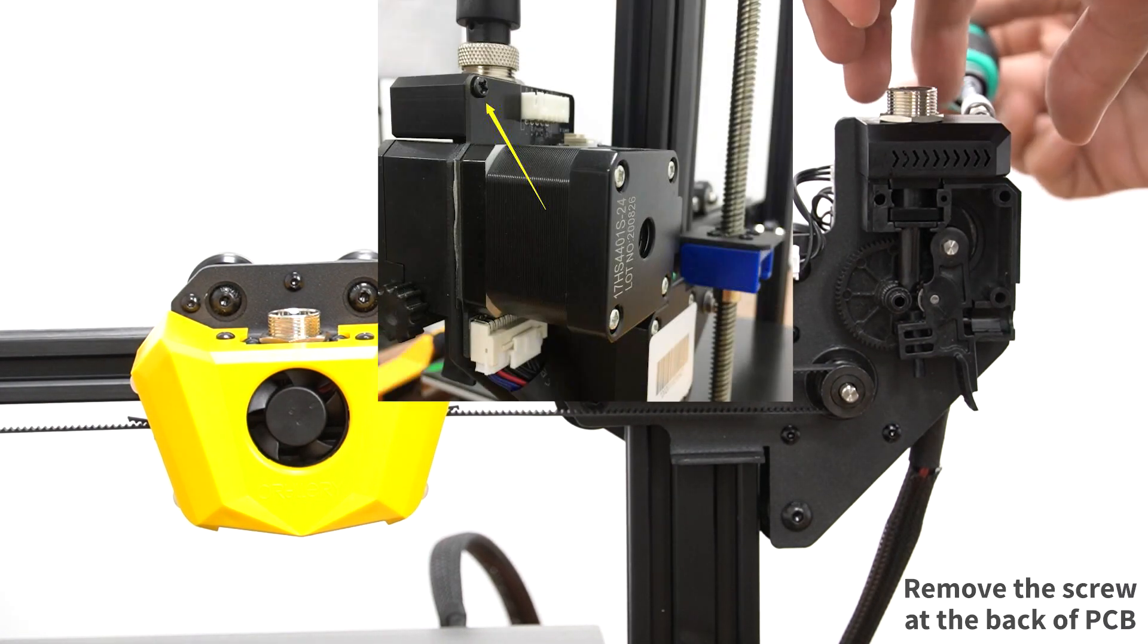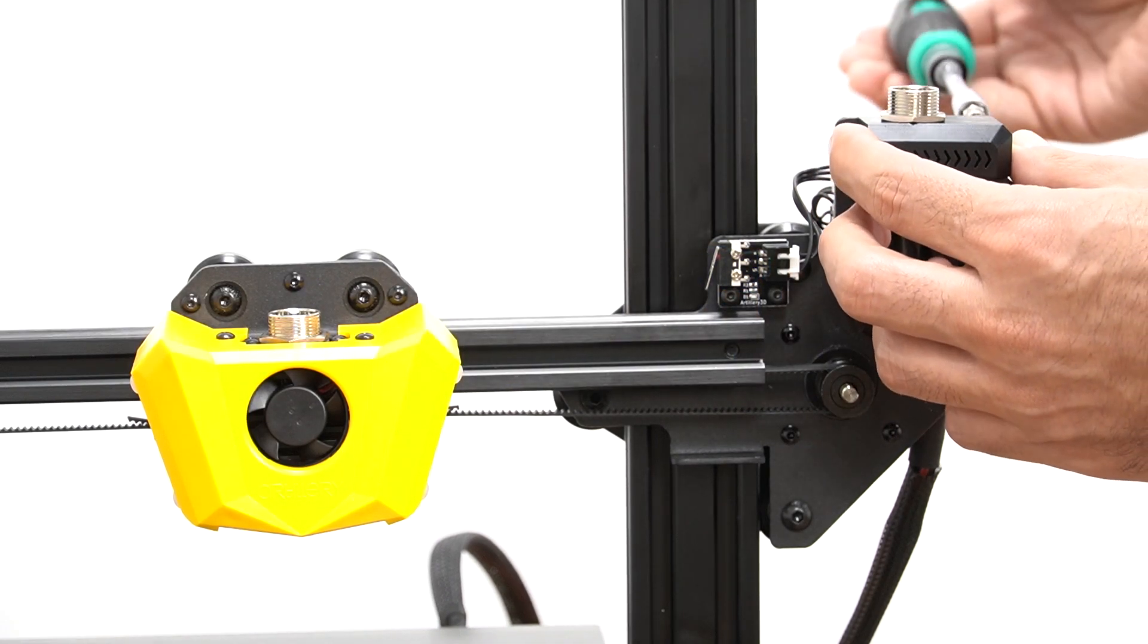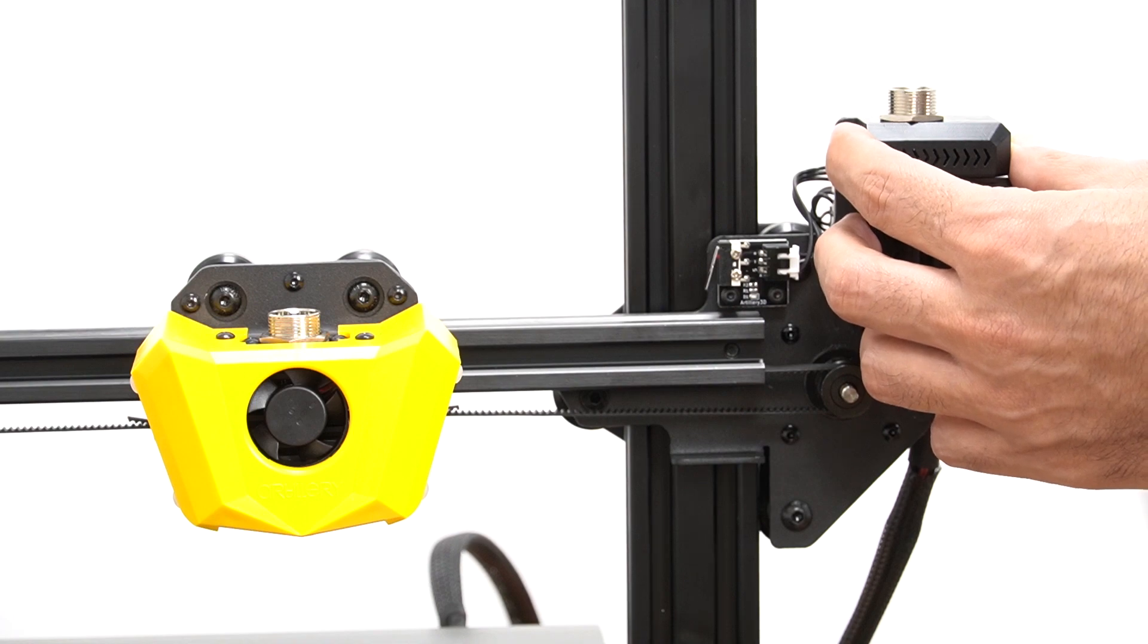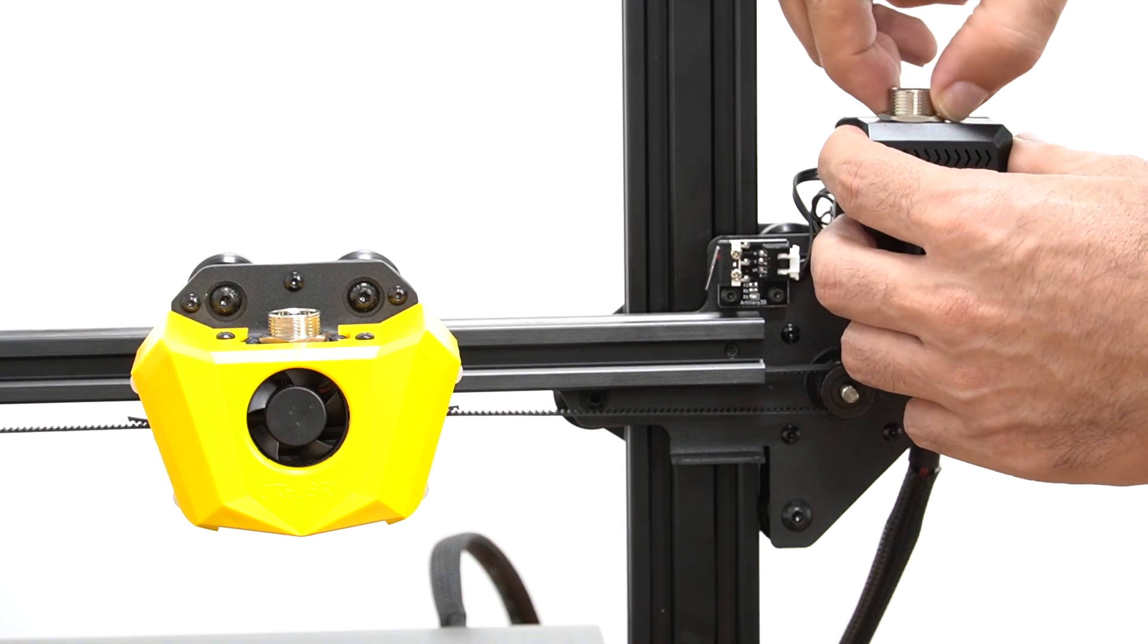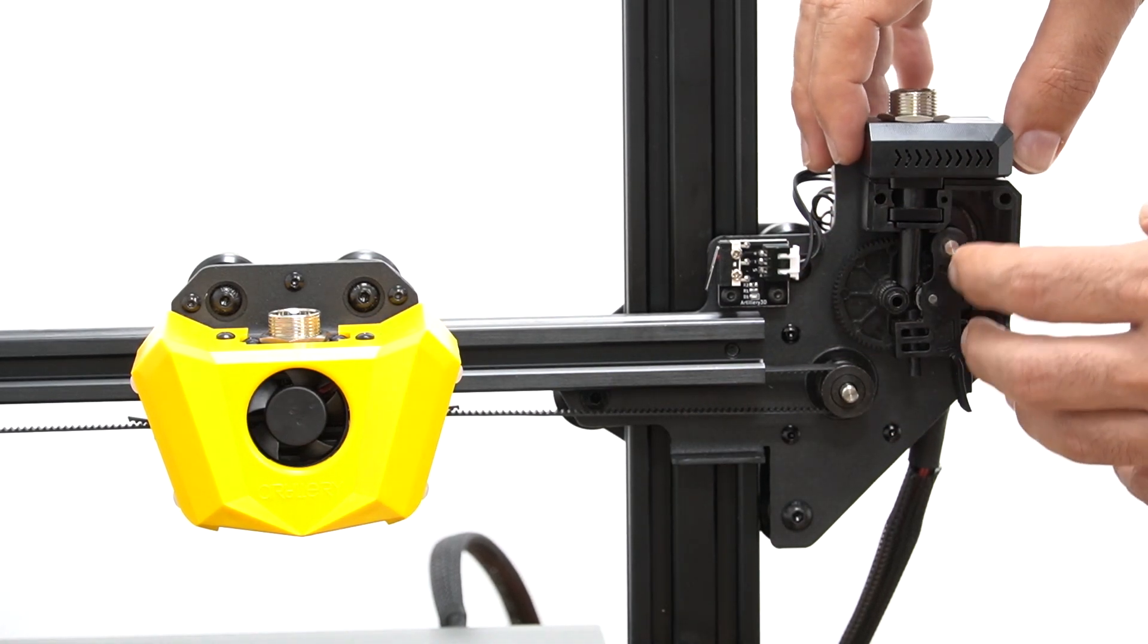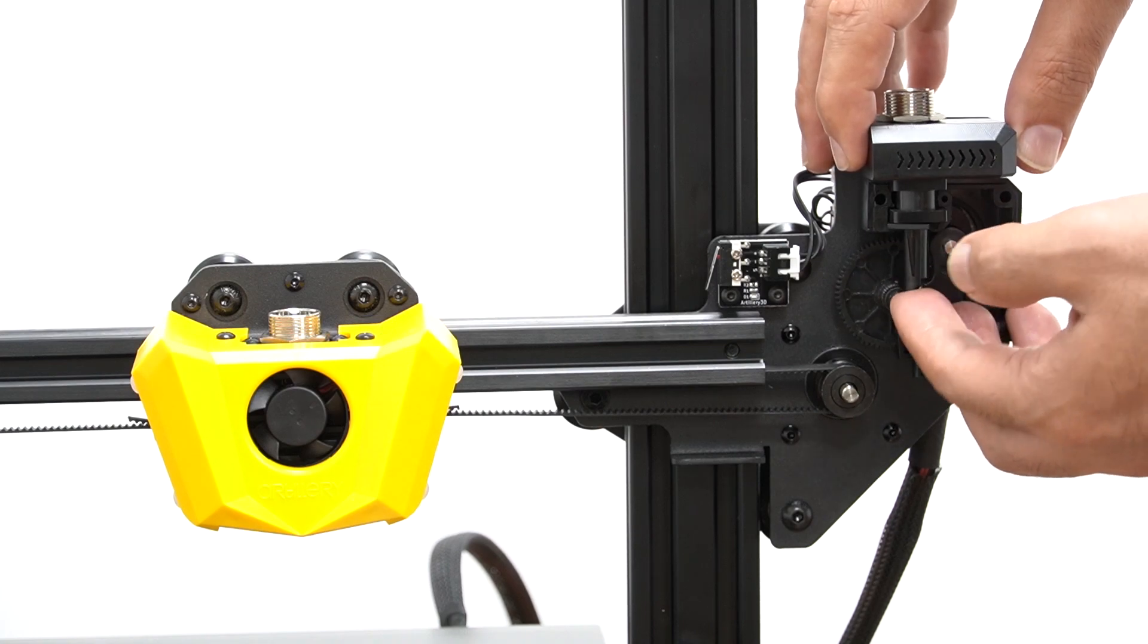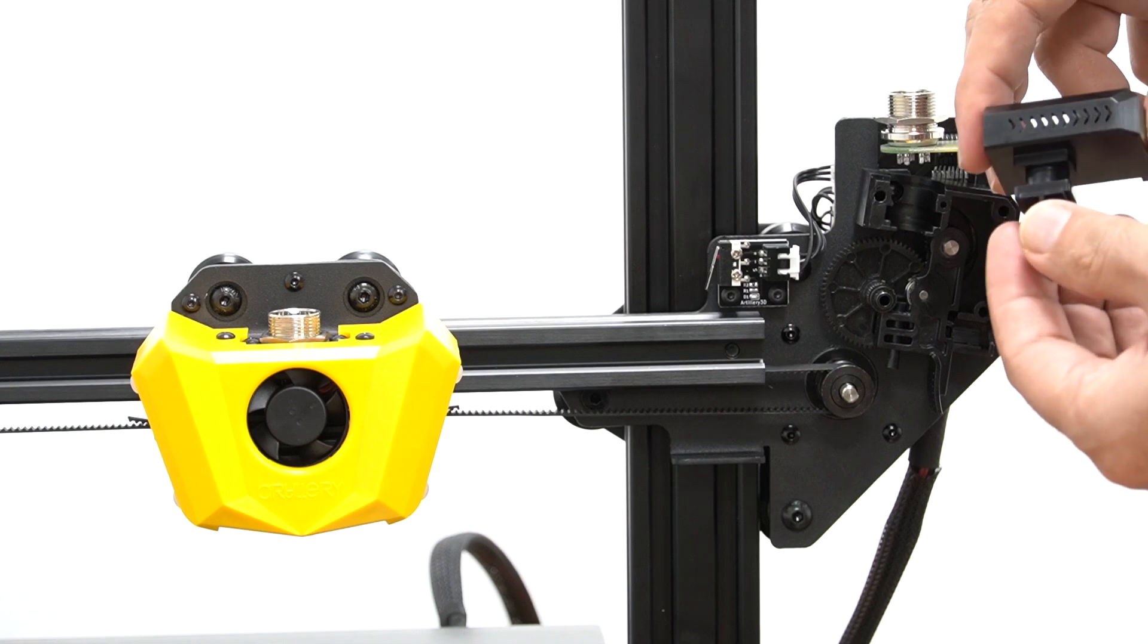There is a screw right at the back of the PCB, only one. So I'm going to remove it, put it down here. And also this, you just can loosen it. As you can see, when I try to remove this cover, this whole part goes out.